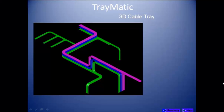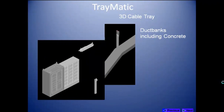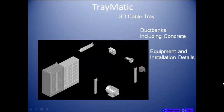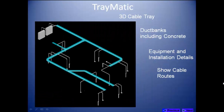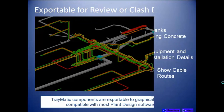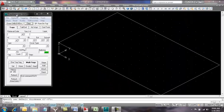Traymatic is our 3D modeling software used to design cable tray systems, duct banks, and custom 3D equipment. Routed cables can be displayed, and models can be used for clash detection and review.